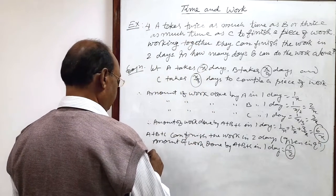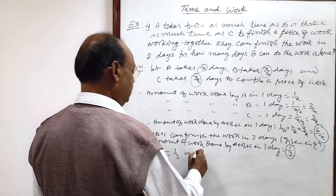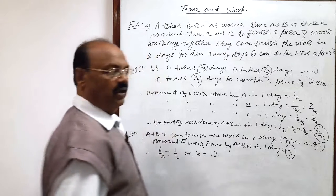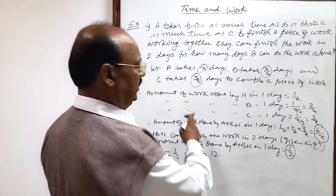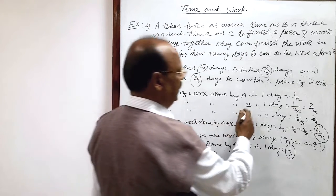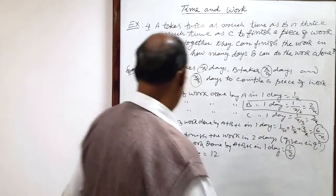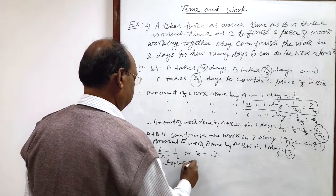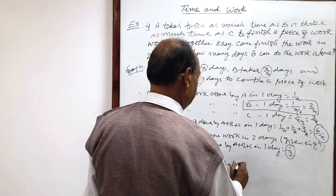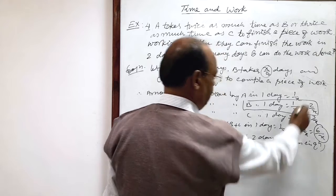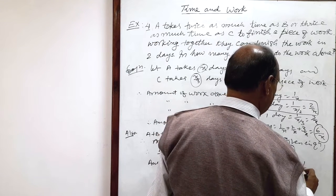Therefore, six by x equals one by two. By cross multiplication, x equals twelve. Now, we have to find in how many days B can do the work alone. We already calculated that the amount of work done by B in one day is two by x. Putting the value x equals twelve, this becomes two by twelve, which equals one by six.